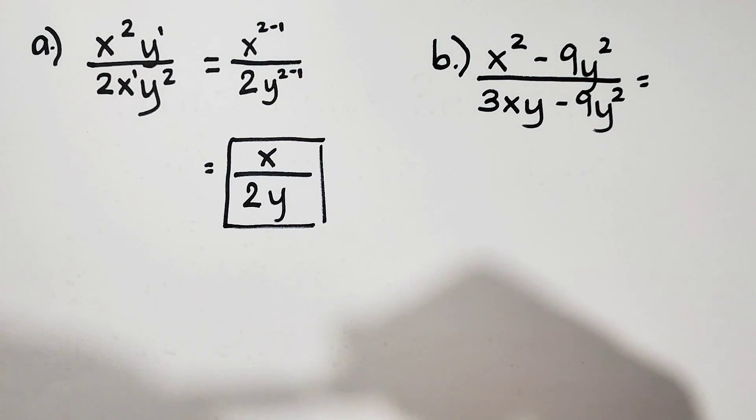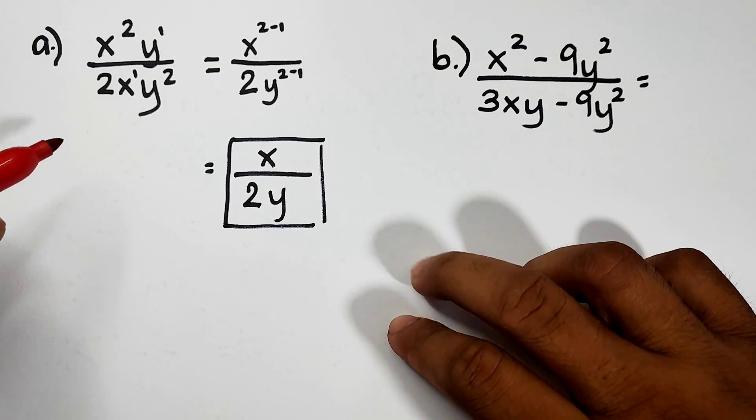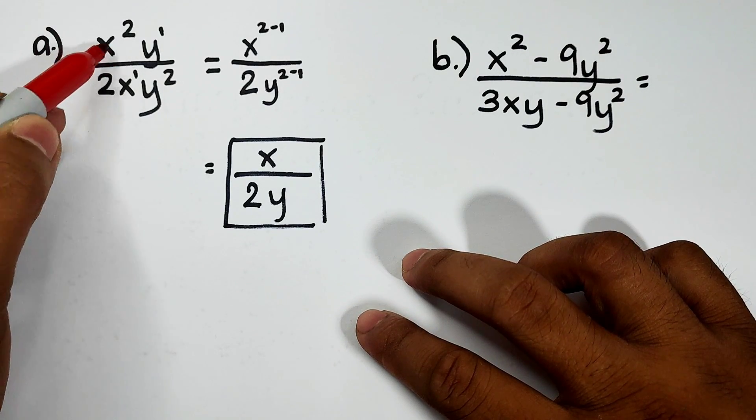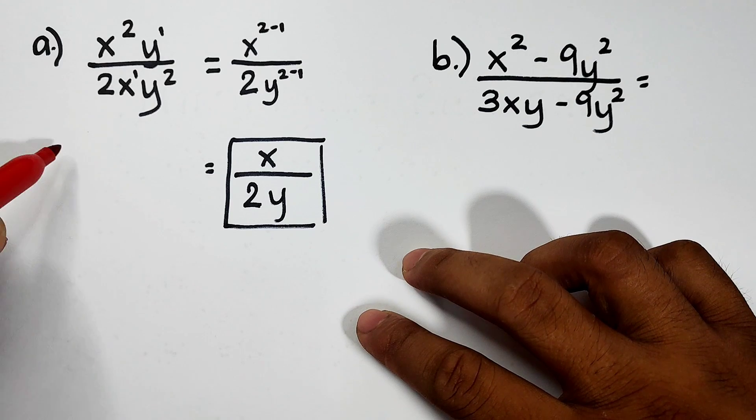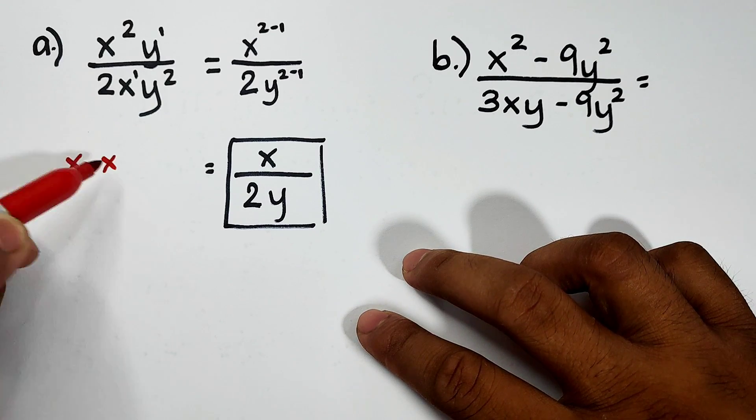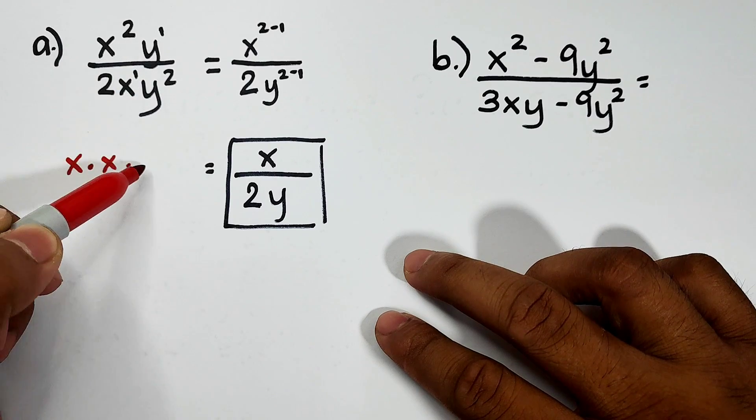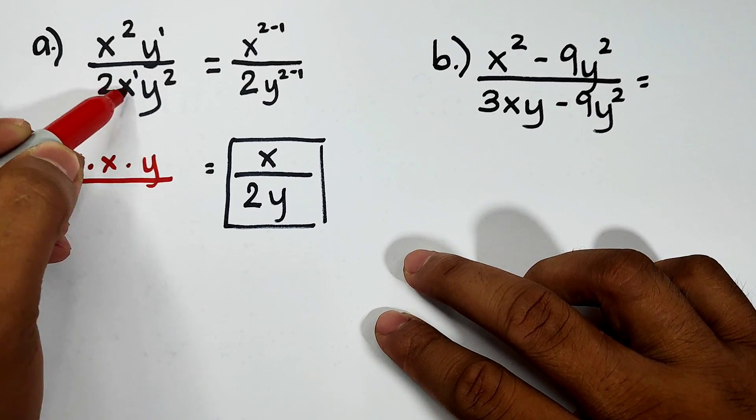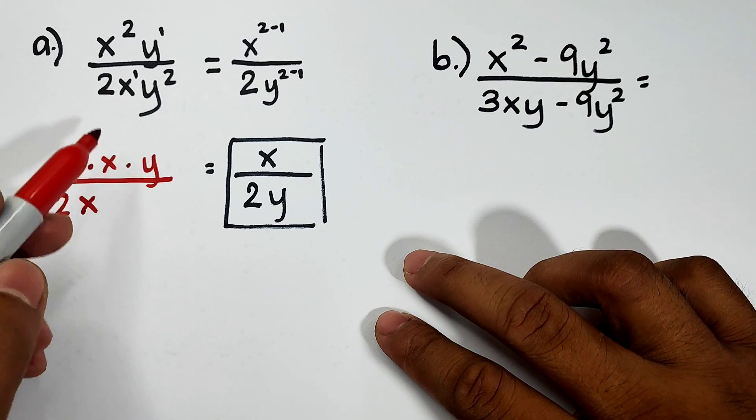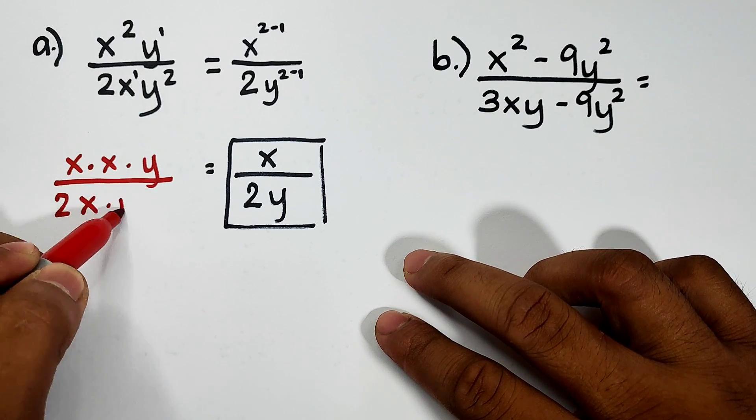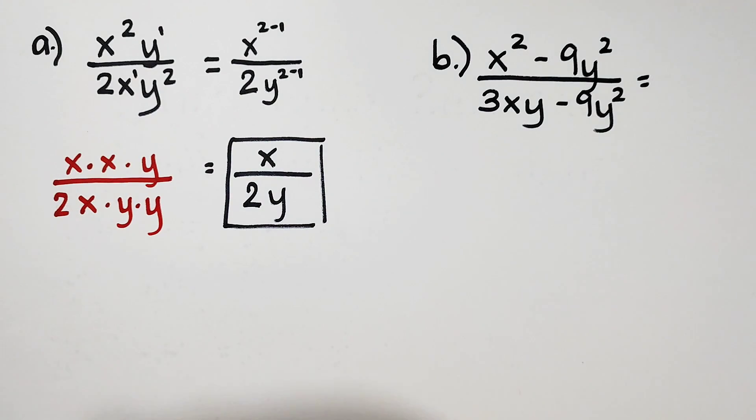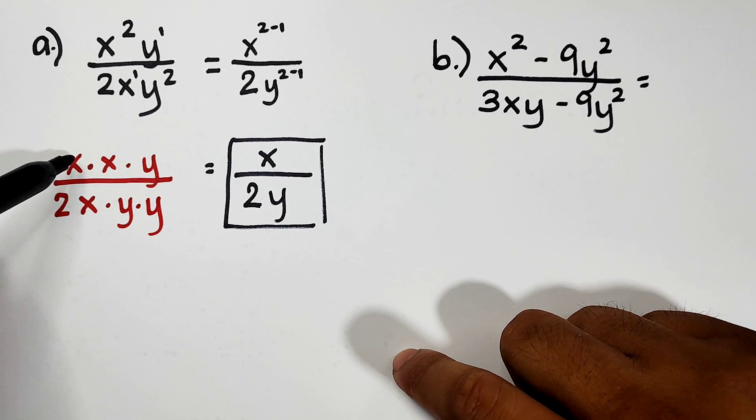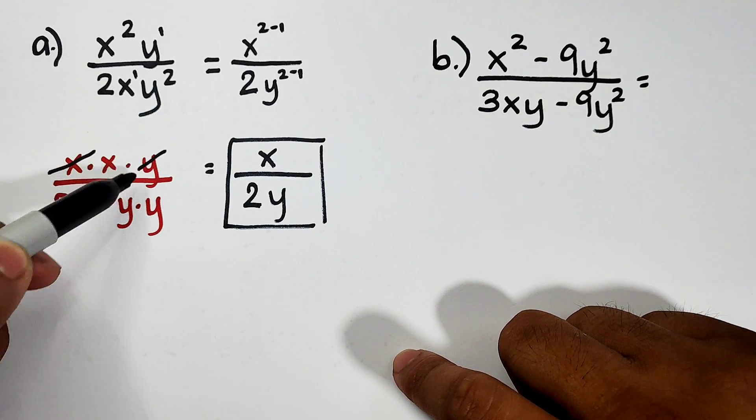Alternative way on how to do that is this. You can do this one. As you can see, we have x squared. When you expand that, that is x times x. Then for the variable y, copy mo lang yung y, over 2. Since we have single x here, for the y variable, expanded form of that is y times y. We can easily eliminate the common variable here.